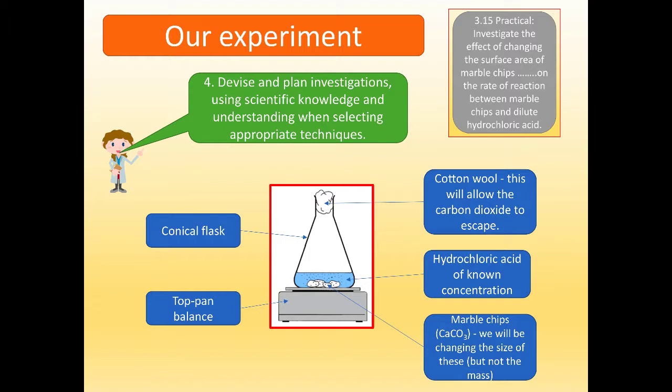Number four, or experimental skill four: devise and plan investigations using scientific knowledge and understanding when selecting appropriate techniques. So can we use our scientific knowledge and understanding to plan a good experiment? Well, here's an experiment we're going to be doing. I'll give you more details in a minute. Look at what we need. We need to have a conical flask. Because of the change in mass, we need a top pan balance. We need cotton wool.